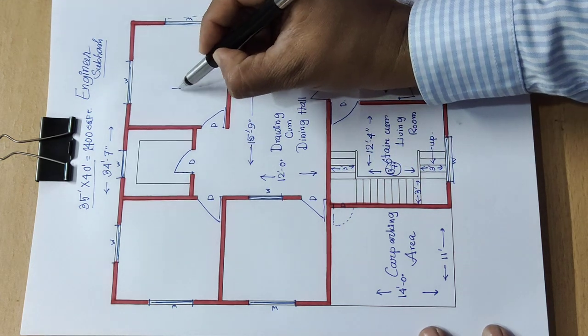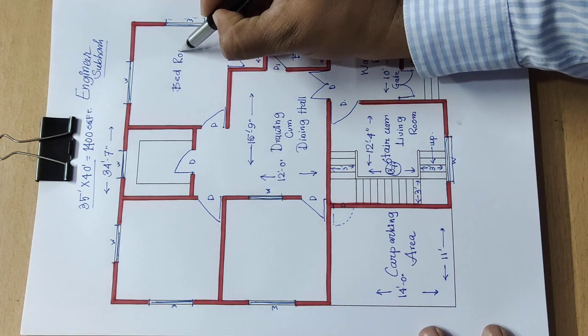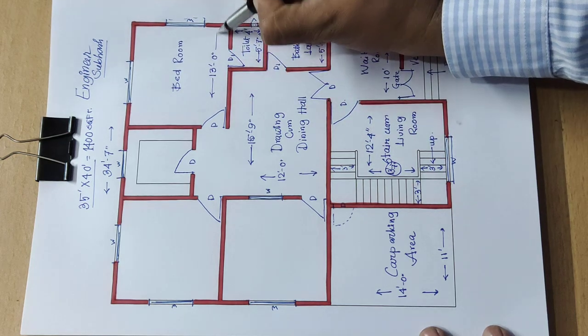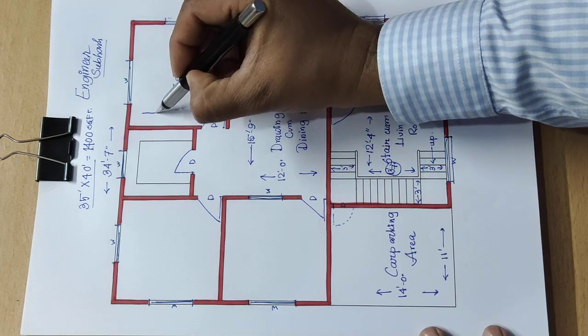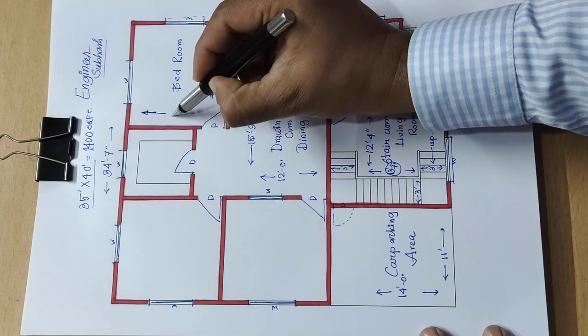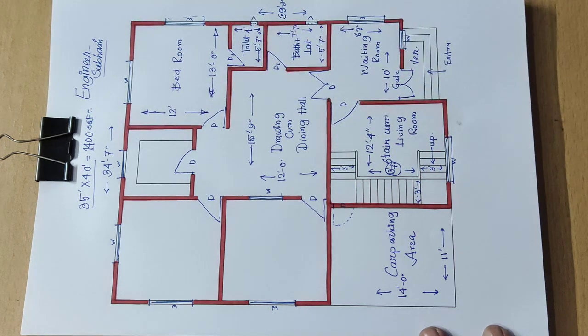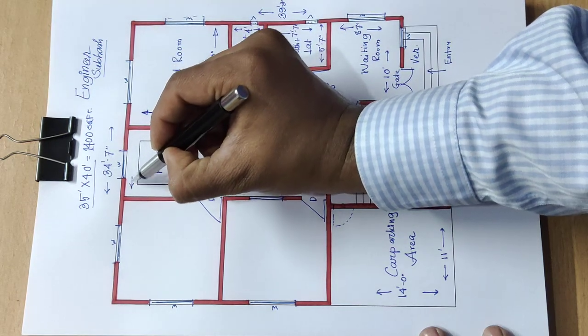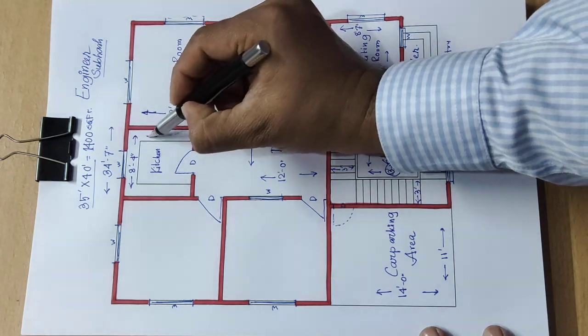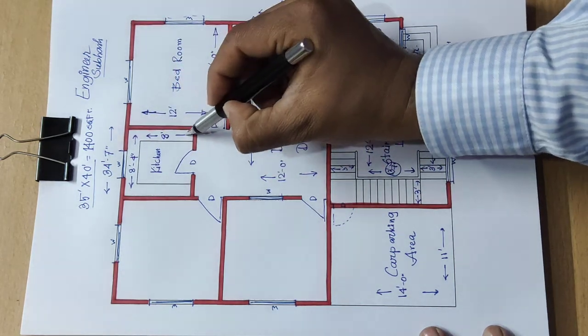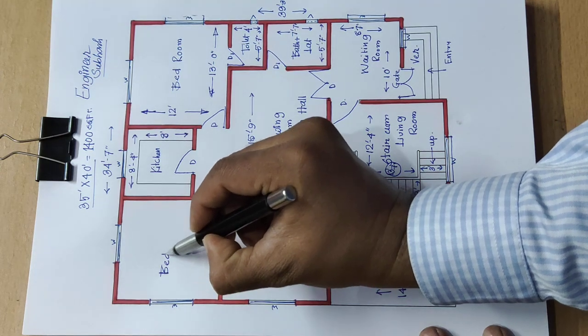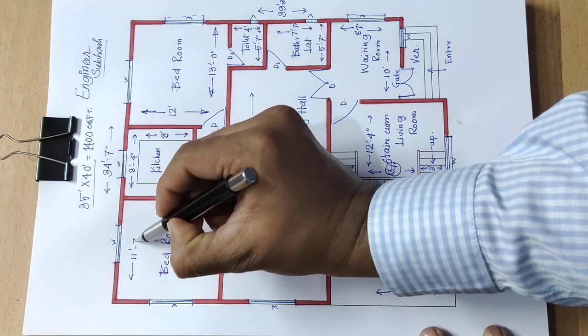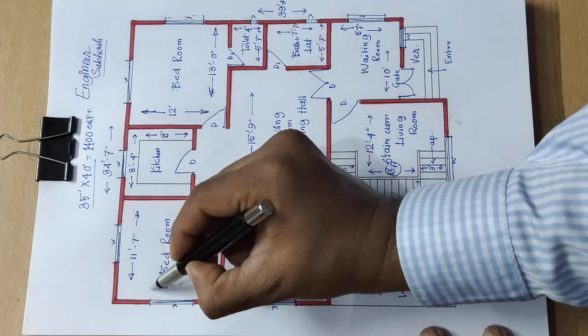Here is bedroom, distance is 13 feet 0 inch, here is 12 feet. Next here is kitchen, distance is 8 feet 4 inch and here is 8 feet. Here is bedroom, distance is 11 feet 7 inch.